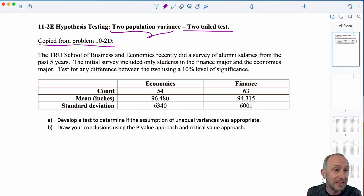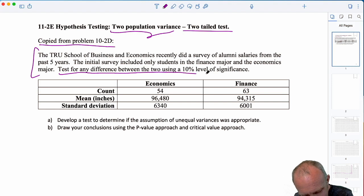Which was a two-population T-test. In that exercise, we were comparing the salaries of TRU School of Business and Economics alumni who had economics and finance majors. In that exercise, we were just testing for a difference using a 10% level of significance. So that was difference in their average salaries. Now, when we're doing those two population T-tests, we're making assumptions about the population variance.